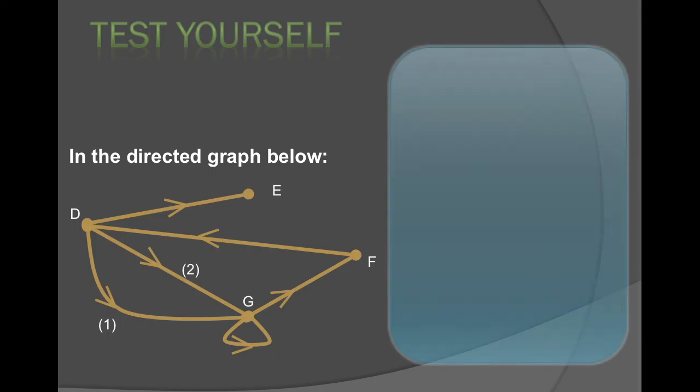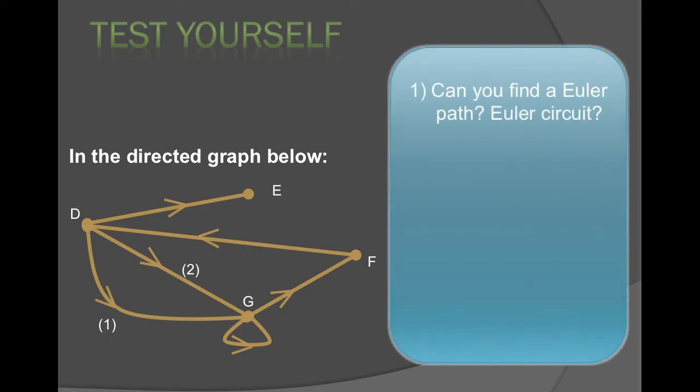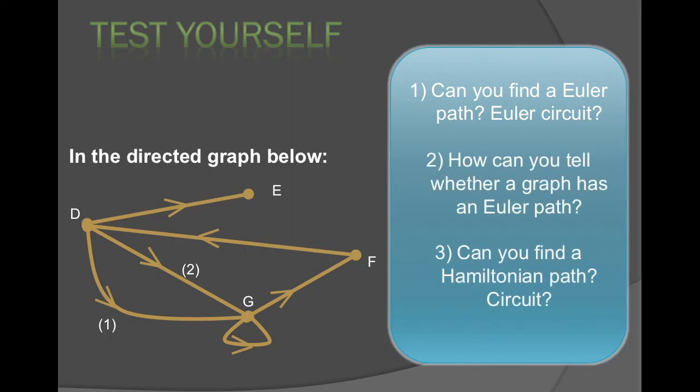Test yourself on this graph. Here it is. Can you find an Euler path and maybe an Euler circuit? How can you tell whether a graph has an Euler path? Can you find a Hamiltonian path or a Hamiltonian circuit?